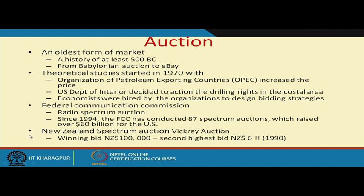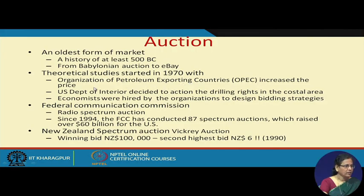However, if auctions are not designed properly, there are some failure stories as well. You can read about the Vickrey auction — a very important auction mechanism — which failed once in 1990, where the winning bid was at a very high price and the second winning bid was at a very low price. In fact, theoretical interest in auctions arose around 1970, when the US decided to sell the drilling rights of its coastal area for oil exploration, and economists were hired to design the bidding strategy for participating in those auctions.